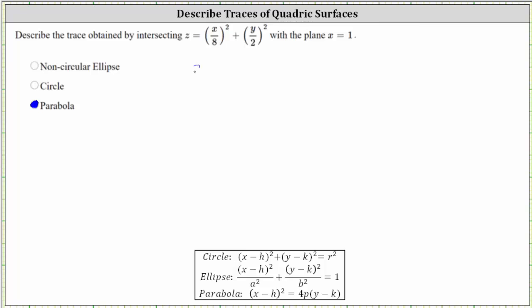Substituting one for x, we have the equation z equals, the square of 1/8 would be 1/64, and then plus, let's write the square of y divided by 2 as y squared. So at this point, we should be able to recognize we have a parabola because we have a linear term and a quadratic term.